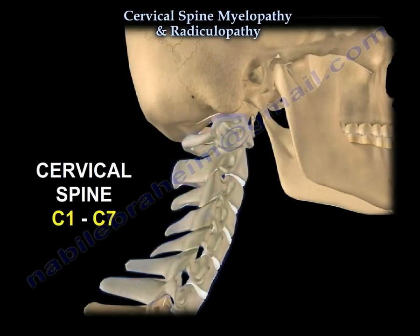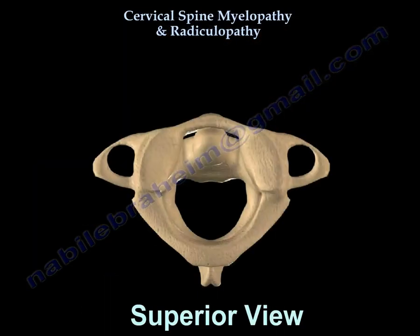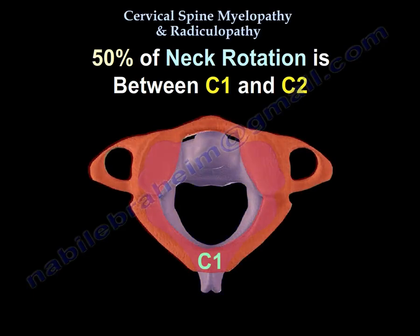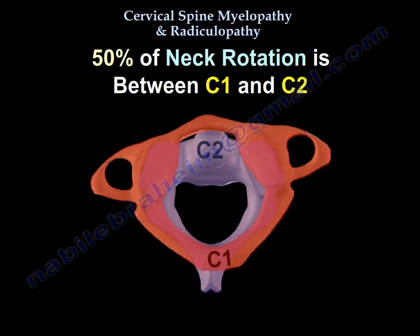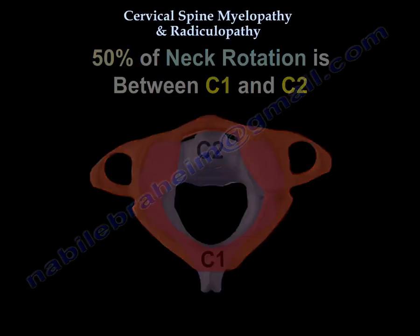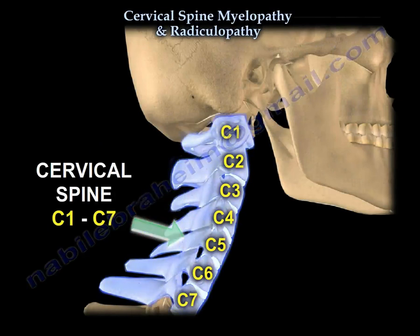Where does rotation of the C-spine mostly occur? C1 and C2 — about 50% of rotation occurs at C1 and C2. Flexion and extension of the C-spine mostly occur at C4 and C5.